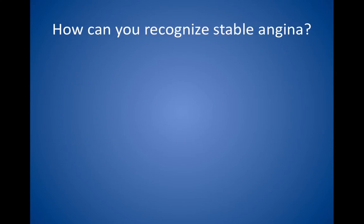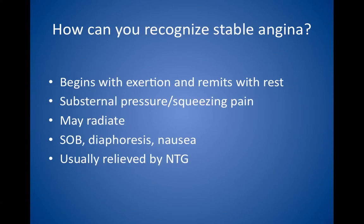How can you recognize stable angina? The chest pain of stable angina begins with exertion or stress and remits with rest or calming down. The pain is described as a pressure or squeezing pain in the substernal area and may radiate to the shoulders, neck, and/or jaw. It is often accompanied by shortness of breath, diaphoresis, and/or nausea. The pain is usually relieved by nitroglycerin. An ECG done during an acute attack often shows ST-segment depression, but in the absence of pain, the ECG is often normal. The pain should last less than 20 minutes or be relieved after sublingual nitroglycerin; otherwise, there may be progression to unstable angina or myocardial infarction.